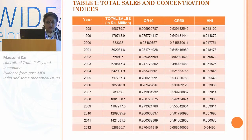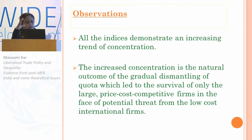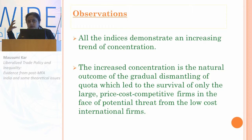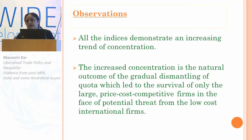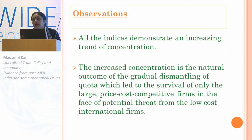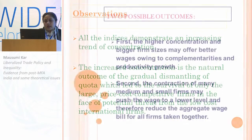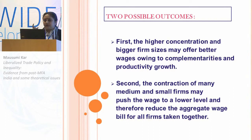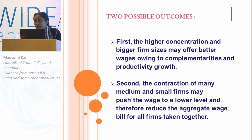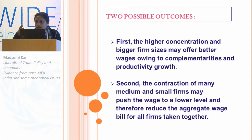All the indices demonstrate an increasing trend of concentration, which is quite natural because the intuition suggests that when the MFA was removed, all countries that had enjoyed a protected market because of assured country quotas are now exposed to global competition, and this effect could be felt directly at the firm level. Therefore, only price-, cost-, and quality-competitive firms could survive vis-à-vis international competitors, while small and medium firms had to exit the market. This may have two possible outcomes: first, higher concentration in bigger firm sizes may offer better wages because of complementarities and productivity growth; or secondly, small and medium firms may push wages to a lower level because of the decrease in demand for labor.